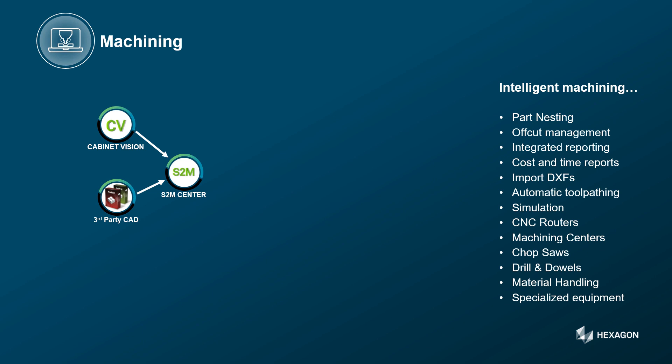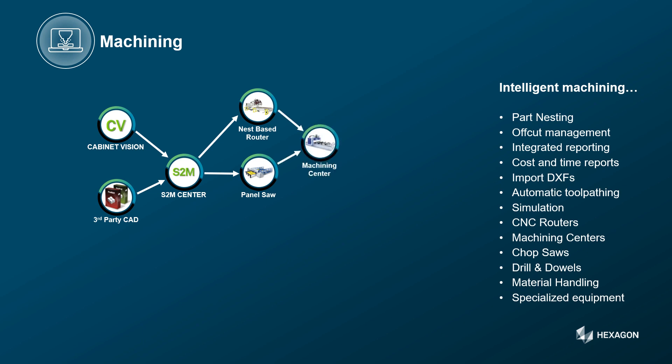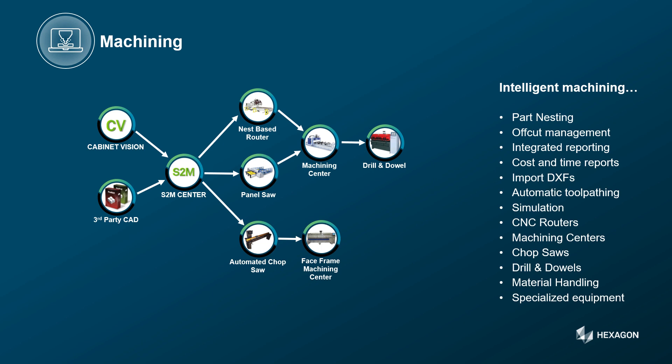In a typical cabinet factory workflow, shaped parts that need machining can be nested and output to the nested base router. At the same time, non-shaped rectangular parts can be sent to the NC panel saw. Any secondary machining from either the nested base router or the NC panel saw can then proceed to the CNC machining center, and then on to the drill and dial machine. Solid wood parts for face frames can be sent to automated shop saws, then on to the face frame machining center, and finally to the beaded frame haunching machine.